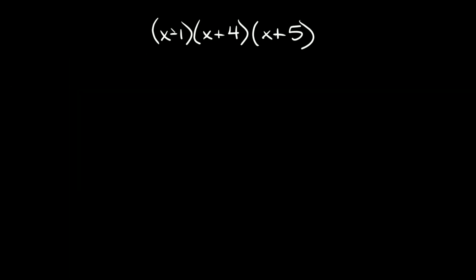Last one: three binomials multiplied together — (x minus 1) times (x plus 4) times (x plus 5). The first thing you want to do is multiply two of them together. There are a couple of different ways: you could distribute like we've been doing, or you could also FOIL — remember, first, outer, inner, last.